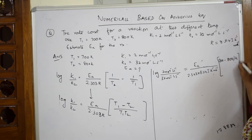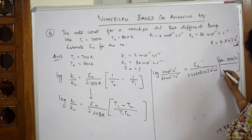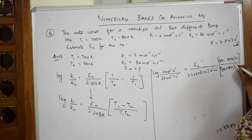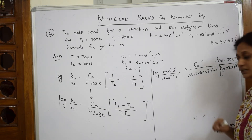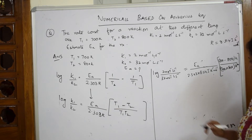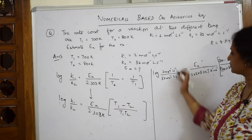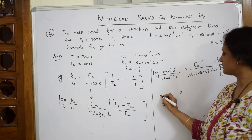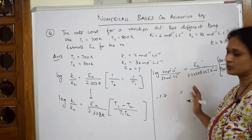Putting this in brackets, divided by T1 into T2 — that is 700 into 800. Note that K2 appears here. Now solving this equation, you will get around minus 1.2 or 1.24.